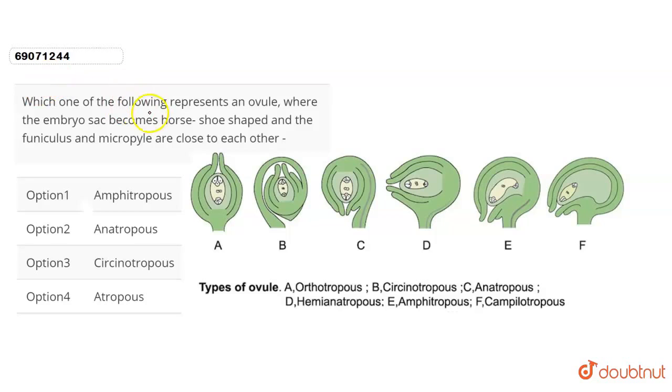The question is: which one of the following represents an ovule where the embryo sac becomes horseshoe shaped and the funiculus and micropyle are close to each other?